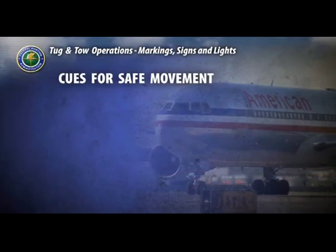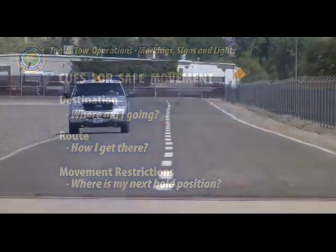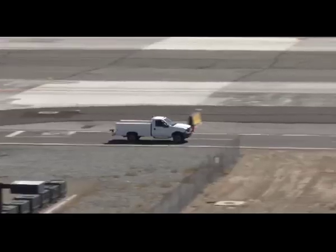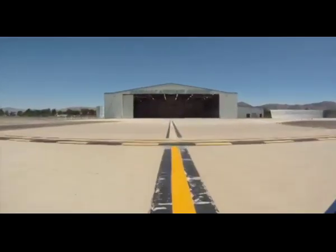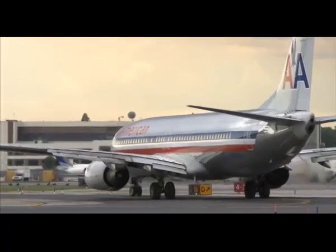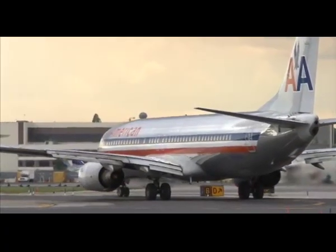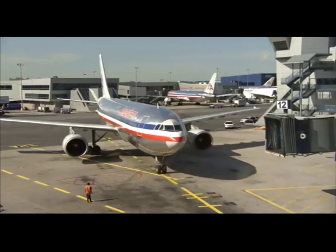Markings, signs, and lights provide three critical clues for safe ground movement: your destination, your route, and any movement restrictions you will encounter. There are markings and signs to indicate ground travel lanes, aircraft movement and non-movement areas, runway and taxiway identifiers, traffic control signs, and safe area indicators.